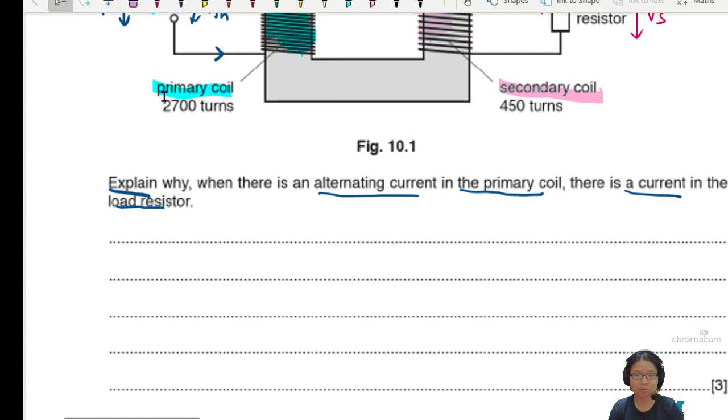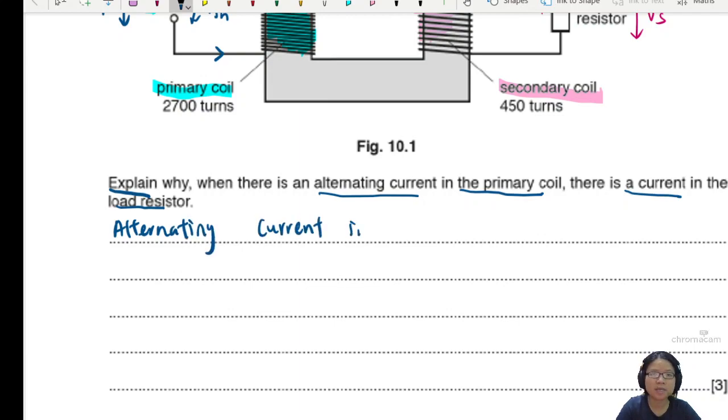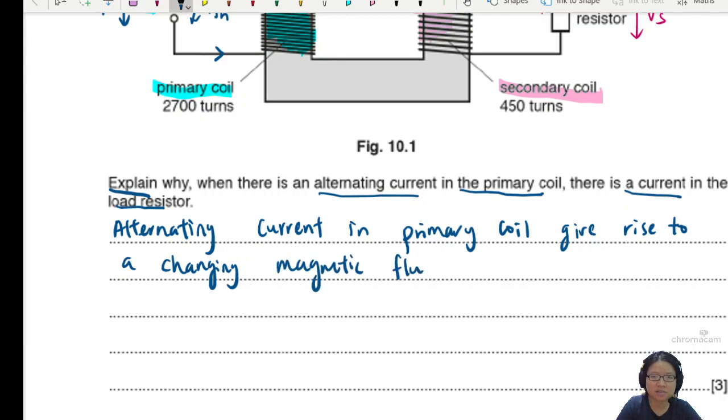Faraday's law says that, if there is a change in flux, there will be an EMF. So the first thing we need to decide is where is the change in flux. So of course, the alternating current means you will alternate the magnetic field. So what I'll say is just the alternating current AC in our primary coil give rise to a changing magnetic flux linkage inside the primary coil.